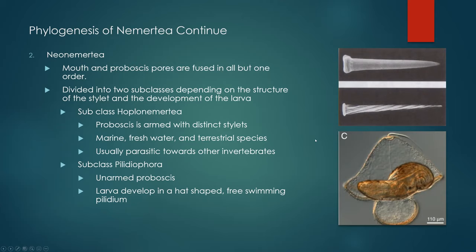The second subclass is the Pilidiophora. These animals do not have an armed proboscis — no stylets — but they are distinguished by the hat-shaped free-swimming pilidium larva that they have during their larval stage. The larval nemertean sits inside the pilidium until it is ready to emerge. It will eat its way through and completely consume the pilidium before going off as a free-swimming larva.